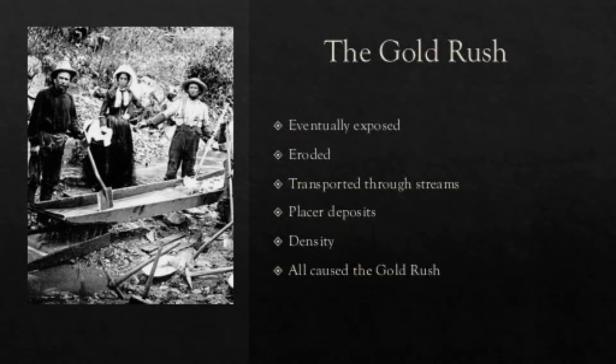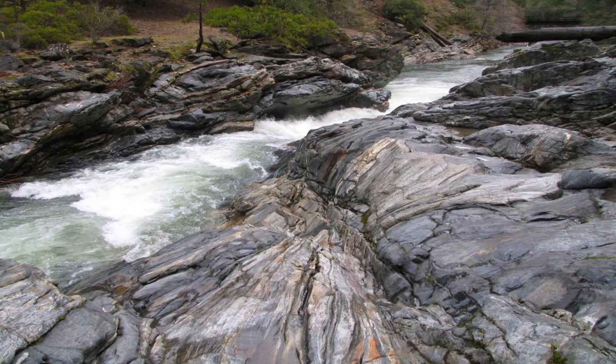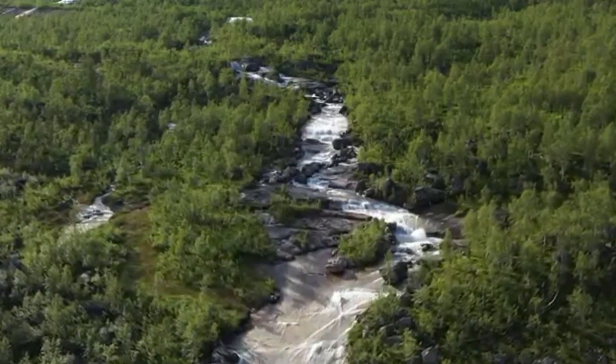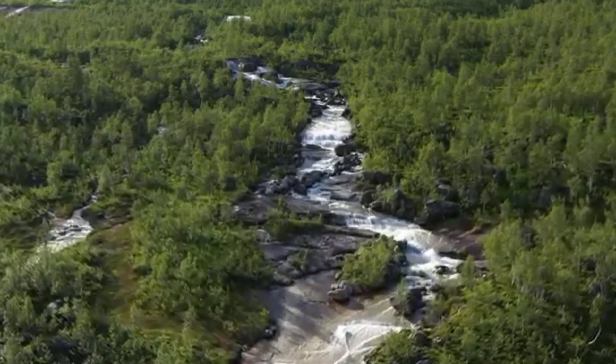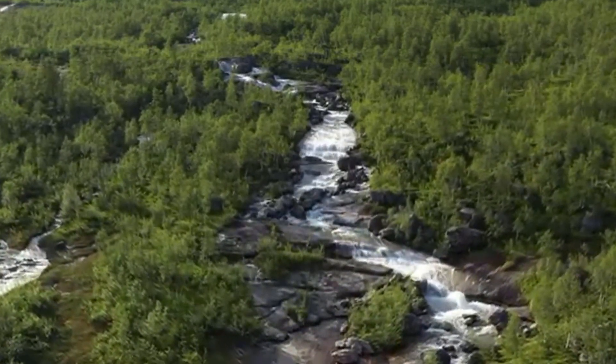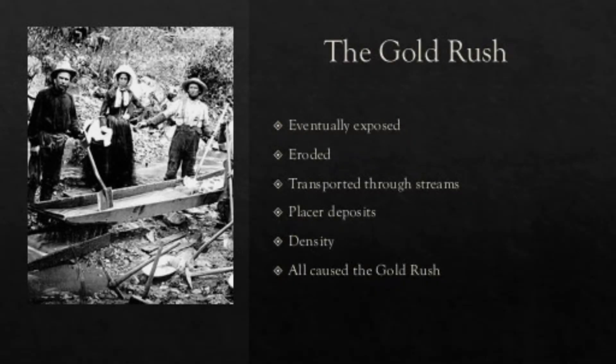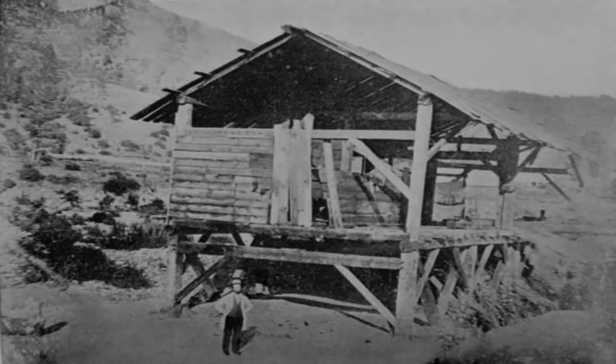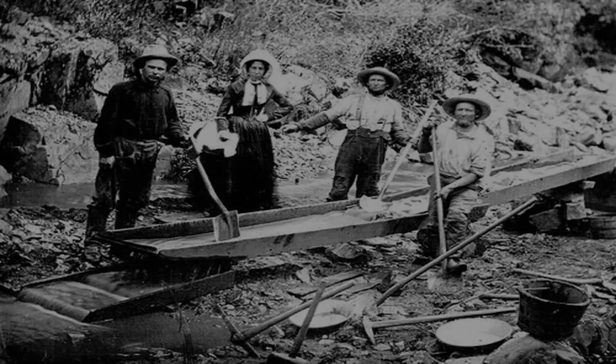The gold rush also comes to mind when talking about gold in California. Gold within the bedrock eventually becomes exposed to the earth's surface, allowing it to be eroded away and broken off from the original source into smaller pieces. These smaller pieces are then transported by streams and, due to their higher density, are deposited in calmer parts of the stream. This all comes together to create what are known as placer deposits, which eventually caused the California gold rush with the discovery of gold at Sutter's Mill along the South Fork American River, as can be seen in this iconic picture.